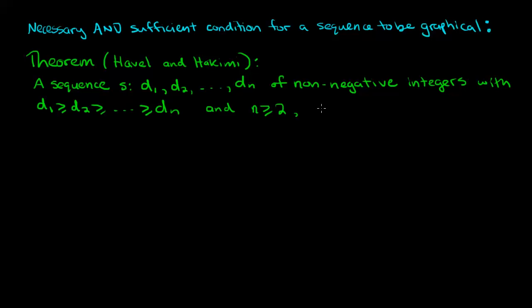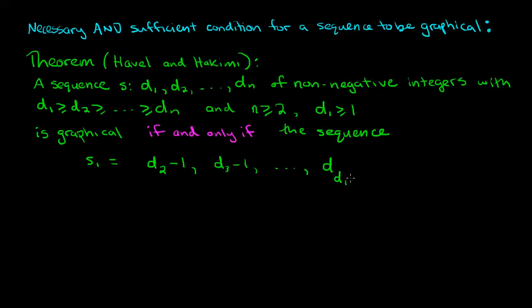A sequence s: d1, d2, up to dn of non-negative integers with d1 greater than or equal to d2 greater than or equal to etc all the way down to dn and n at least 2 and d1 at least 1 is graphical if and only if the sequence s1 which is equal to d2 minus 1, then d3 minus 1 and keep going until you get to d subscript d1 plus 1 minus 1 and then from then on the same terms as normal so d subscript d1 plus 2 all the way up to dn is graphical. So if and only if this new sequence is graphical and notice that the things that have had a 1 subtracted from them there were d1 terms here.